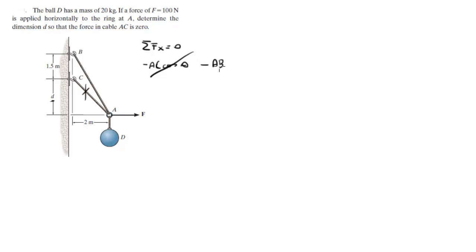Minus AB cosine of phi, and I'm calling this angle right here phi, plus 100 is equal to zero. So AB cosine of phi is equal to 100. Got one equation right here.